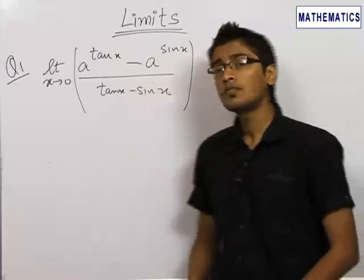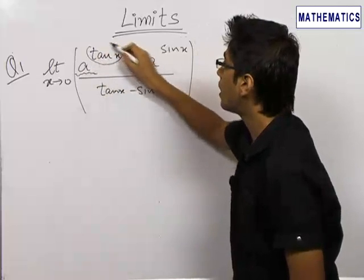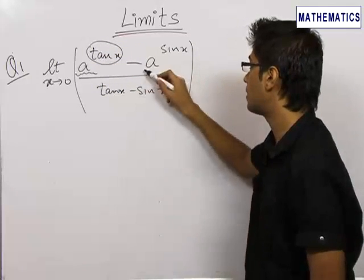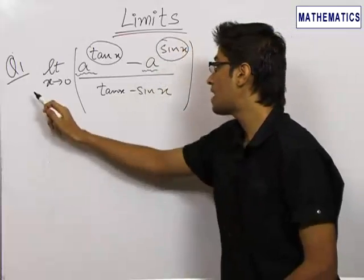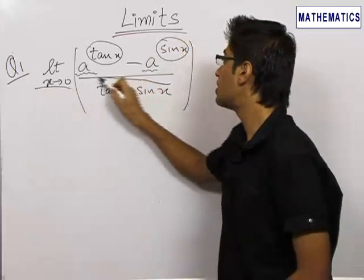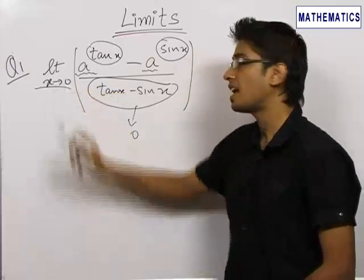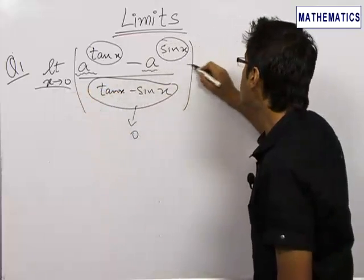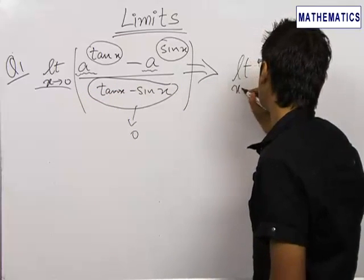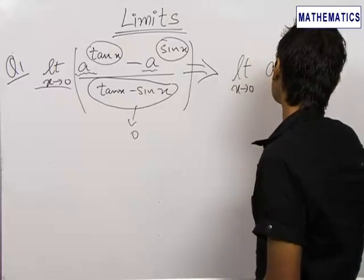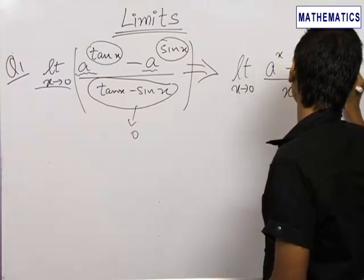On seeing this question, the first thing that should strike our mind is we have a raised to a quantity which is going towards 0, and in the denominator we have a quantity which is again going towards 0 as x tends to 0. These things indicate just one formula which we learned earlier: limit x tending to 0 of a^x minus 1 upon x is equal to ln a.